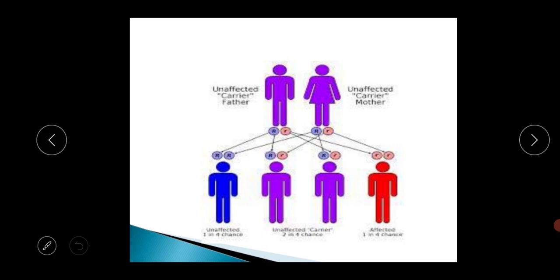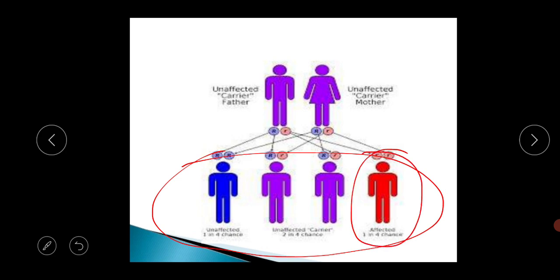When crossing an unaffected carrier father with an unaffected carrier mother, we get four offspring. Out of four offspring, one male will be unaffected, two offspring will be unaffected carriers, and one offspring will be affected. Through pedigree analysis we can determine how many offspring will be carriers, totally unaffected, or totally affected.